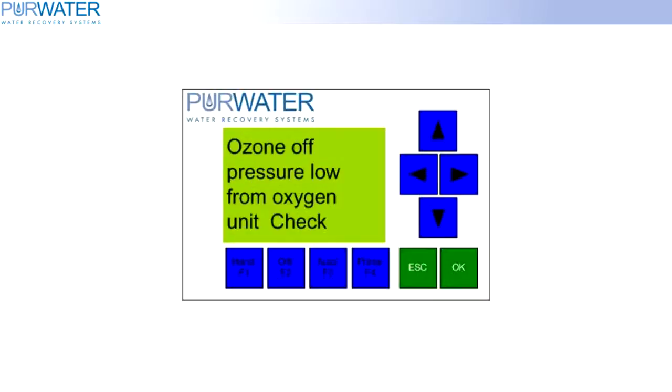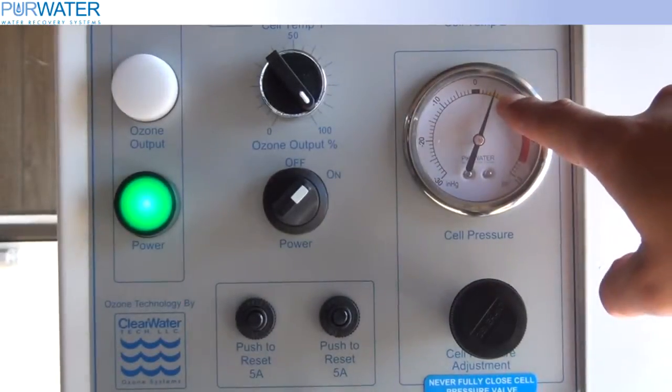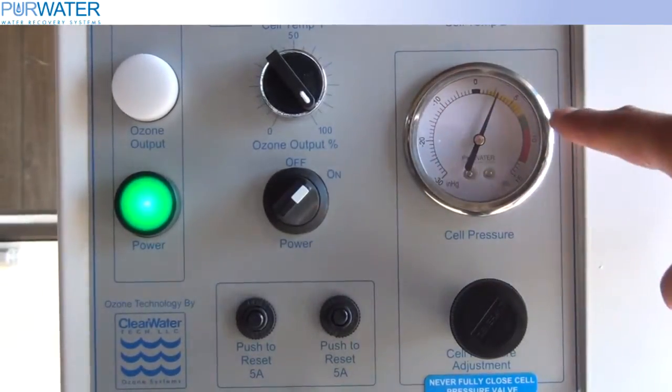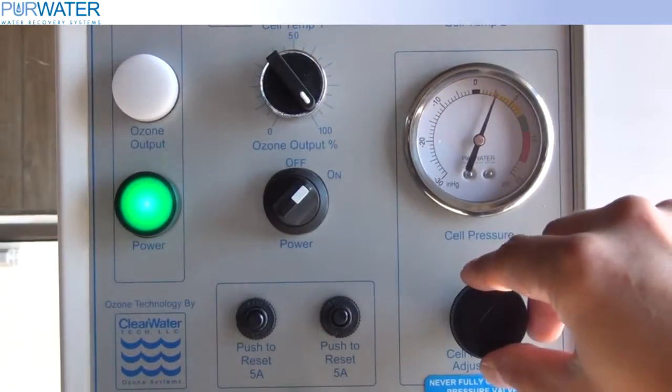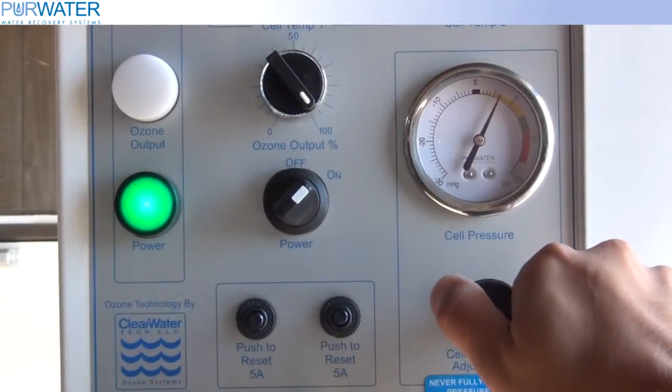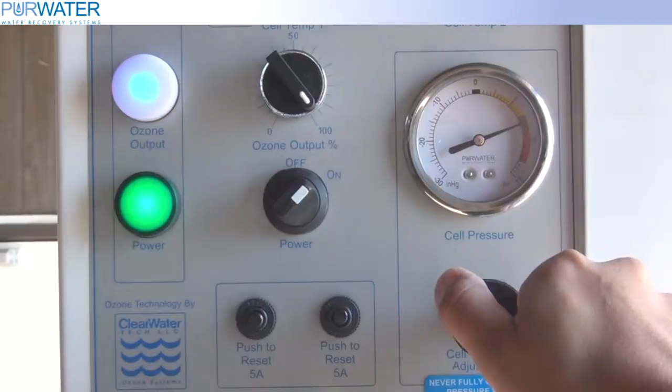If your HMI screen is showing a low pressure fault, the first thing we want to look at is the ozone cell pressure gauge. If your cell pressure is not at 8 psi, use the cell pressure adjustment valve and set the pressure to 8 psi. This should clear the fault and you should start producing ozone.